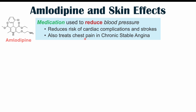Let's talk about what amlodipine is and some of the more common side effects of its use. Amlodipine is a medication used to reduce blood pressure. It can also reduce the risk of cardiac complications and strokes, and it can also be used to treat chest pain and chronic stable angina.